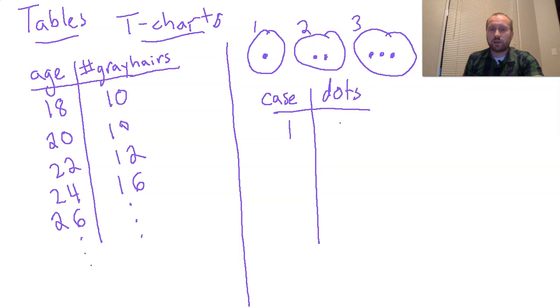So case one, I have one dot. Case two, I have two dots. Case three, I have three dots.